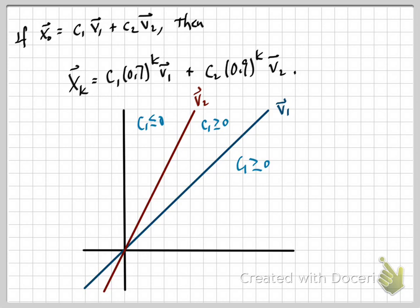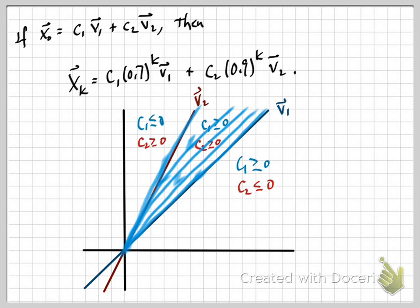But then this tells me that x sub k is c1 times 0.7 to the k times v1 plus c2 times 0.9 to the k v2. Let me just draw in the conditions on c1 and c2 that correspond to these regions. So I have the eigenvectors drawn in here again in blue and red. This top region, top wedge has c1 less than or equal to 0. The middle and the bottom one have c1 bigger than or equal to 0.